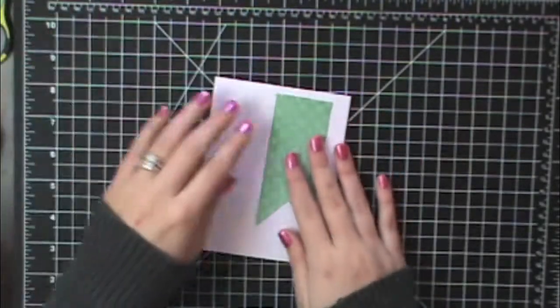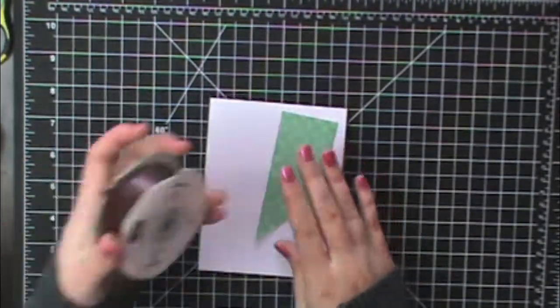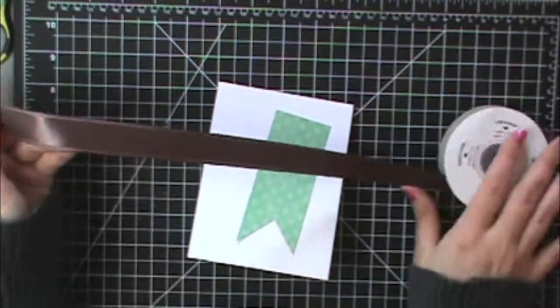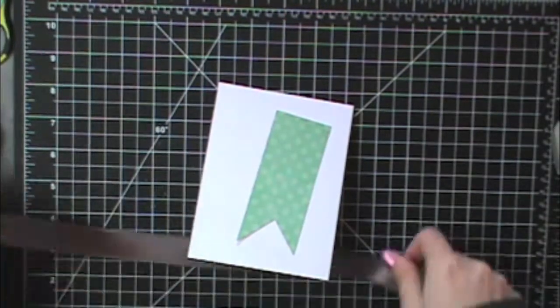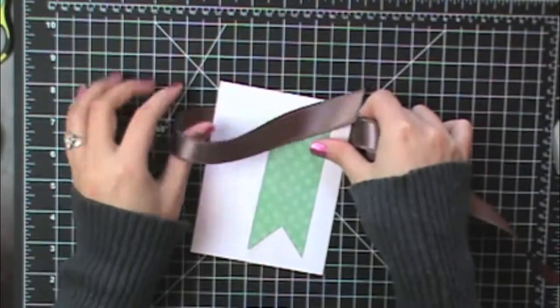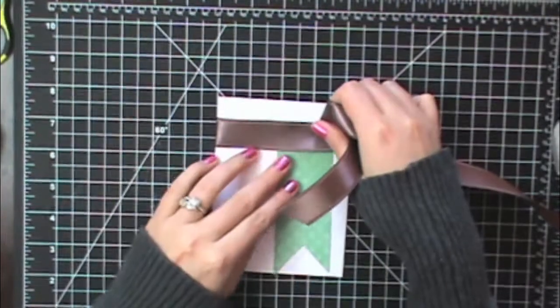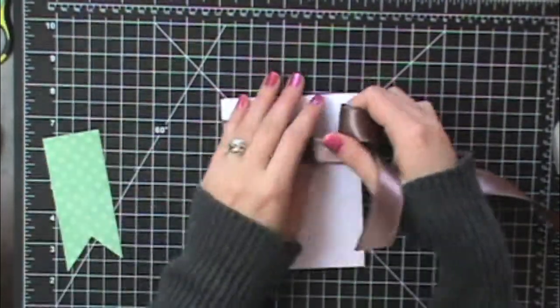I also want to add some ribbon so I've got some thick satin ribbon. This is just something that's been retired from stamping up for a long time. I'm going to have this going across here. I'll just get this attached.